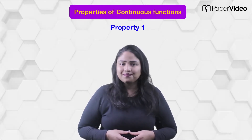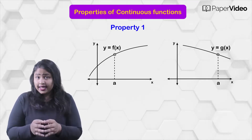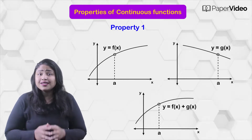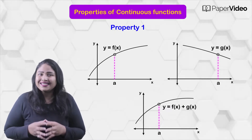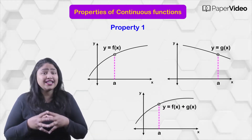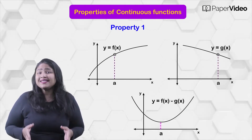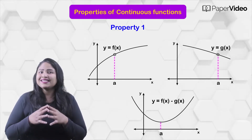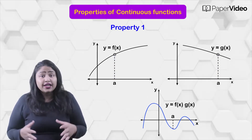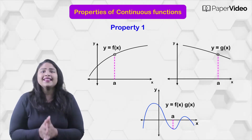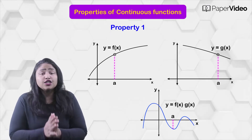According to the first property, if f and g are two functions continuous at x equals to a, then the function f plus g is continuous at x equals to a. The function f minus g is continuous at x equals to a. The function fg is continuous at x equals to a. This means the sum, difference, and product of the functions are each continuous at the same point where both functions are continuous individually.